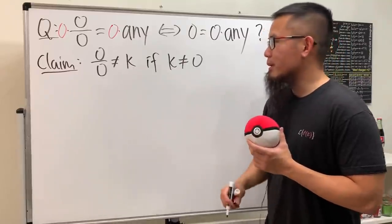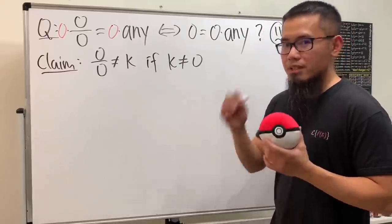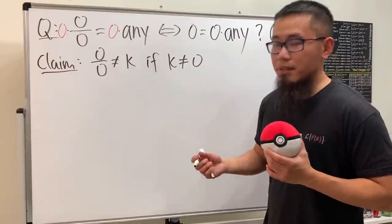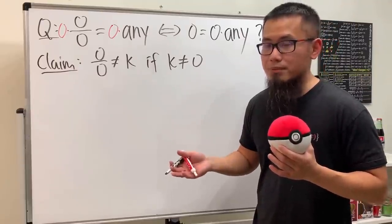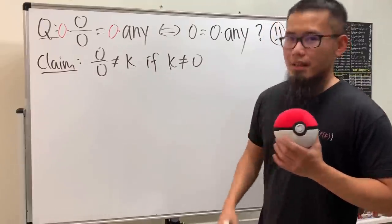By the way that's pretty much what I'm saying. Zero over zero, if you want to define it, then we better define it to be zero. So that's exactly what I'm saying and yes we are going to prove this by contradiction.